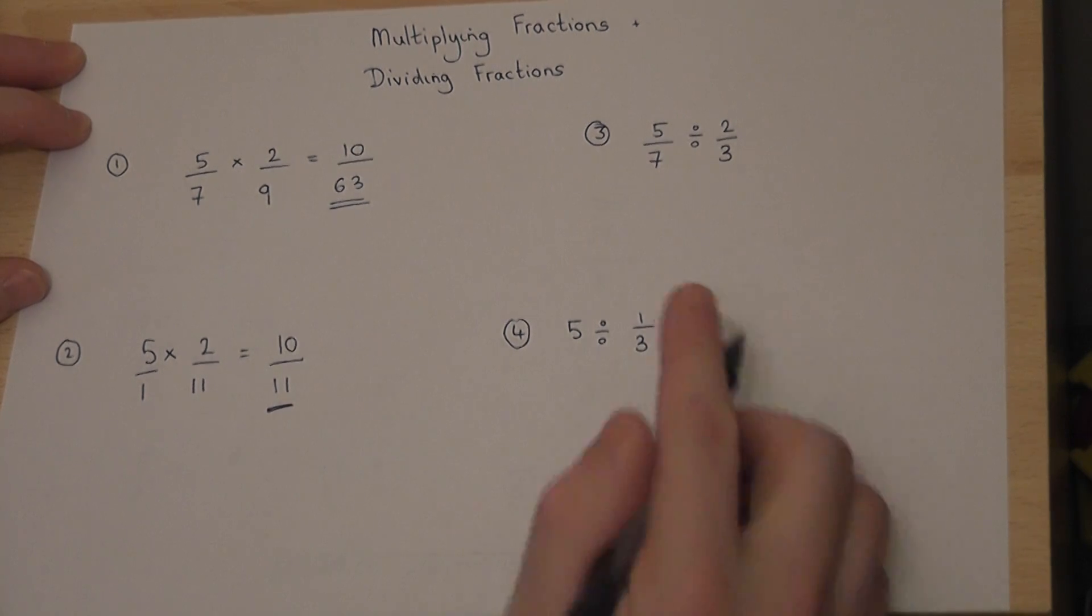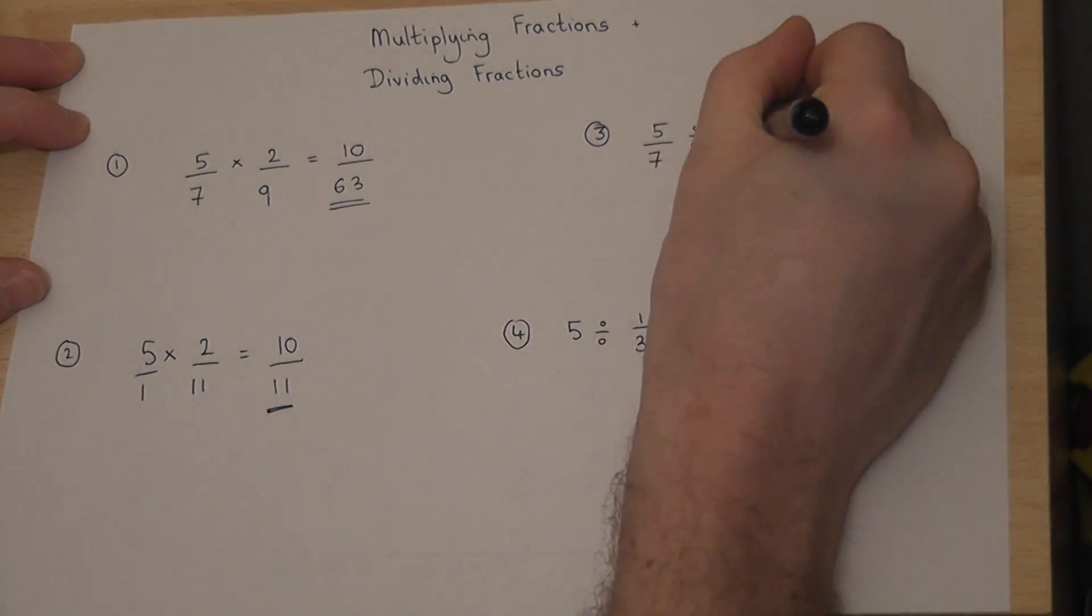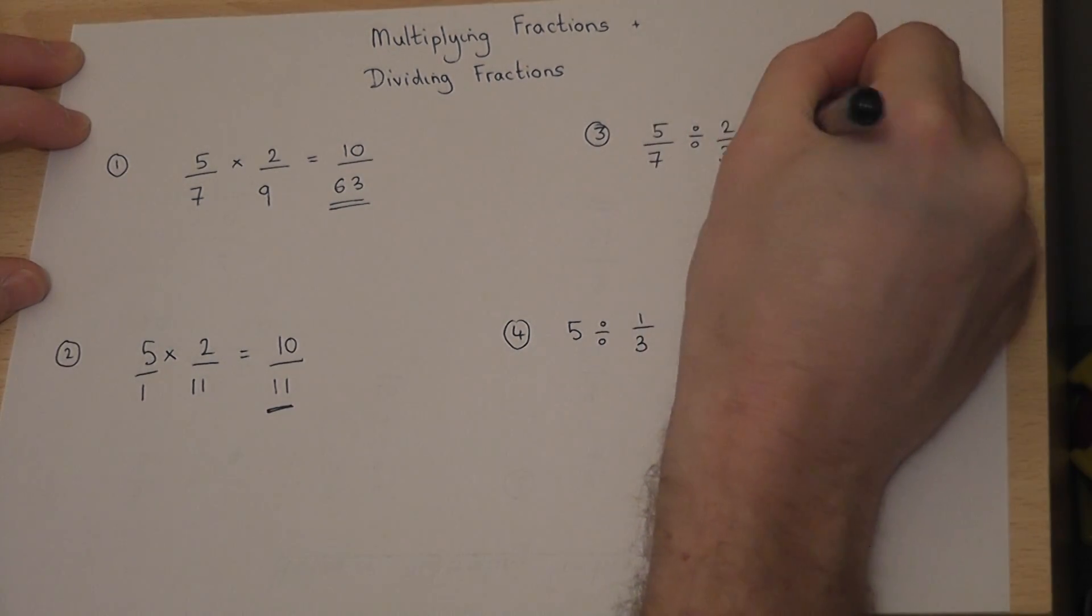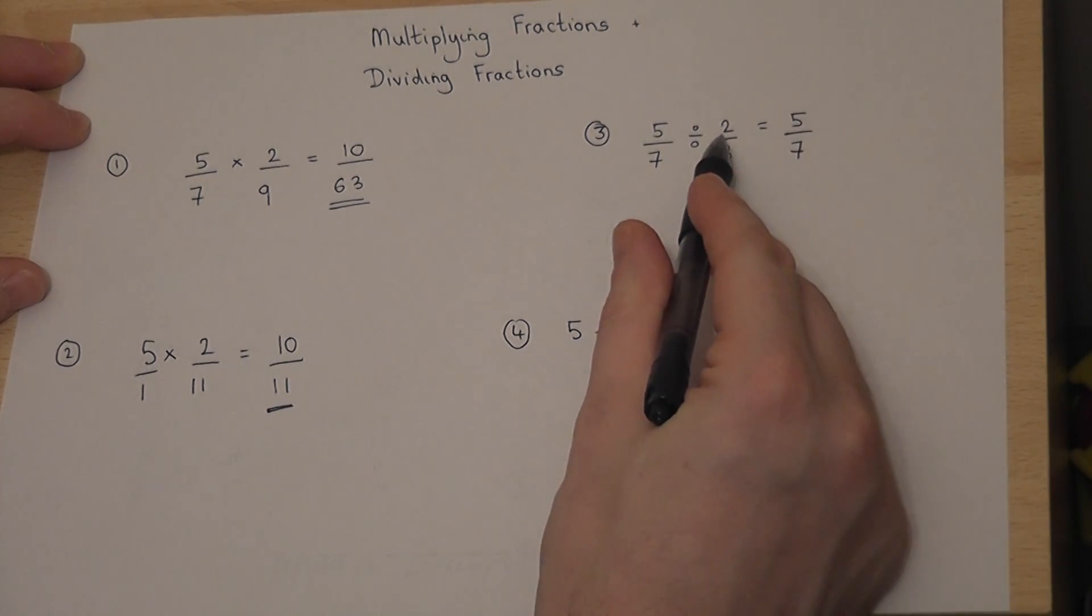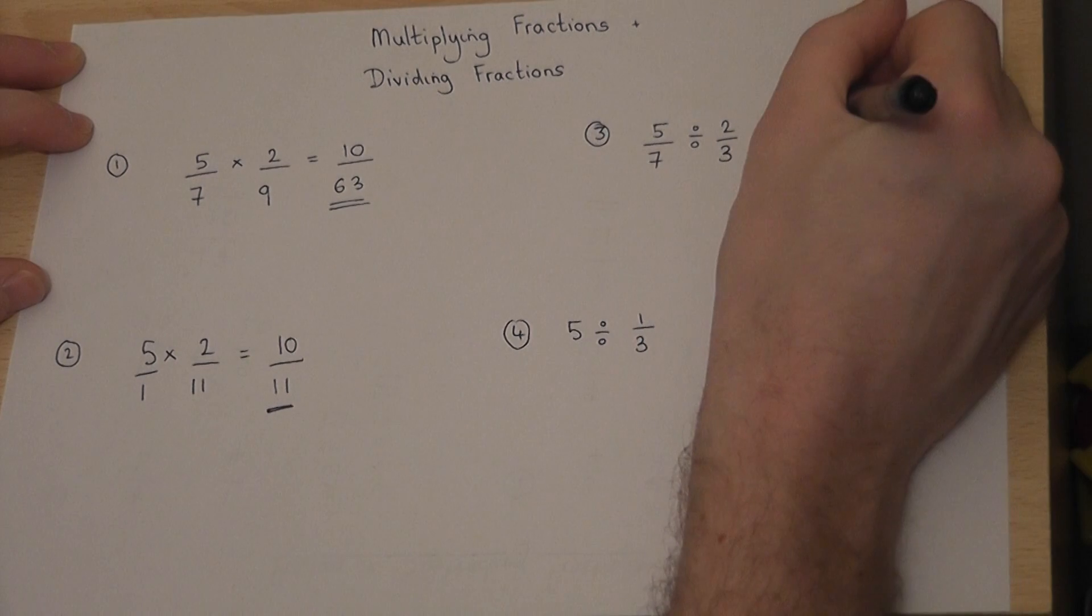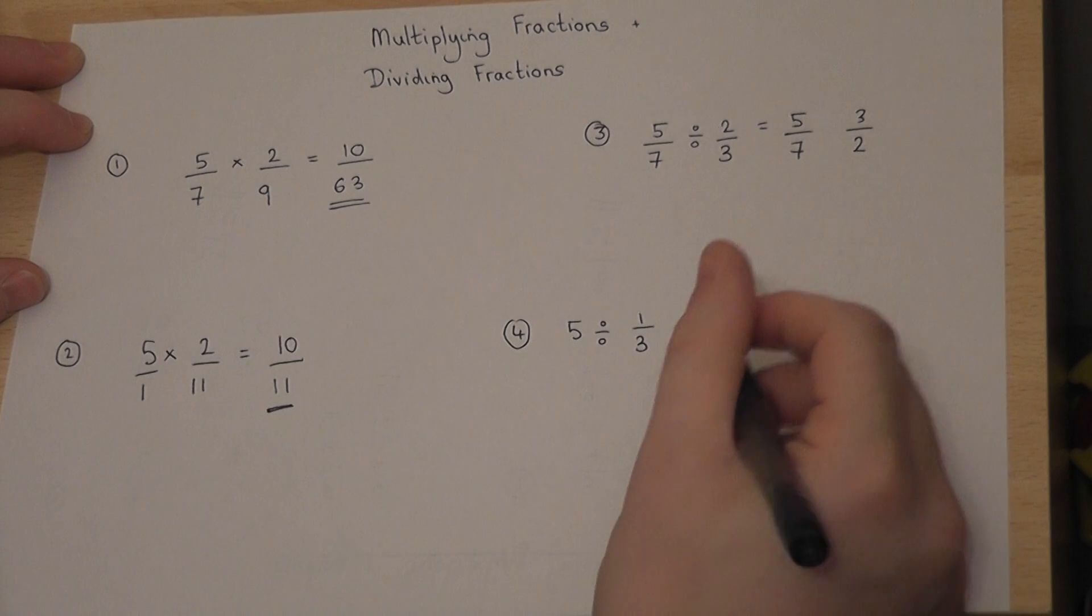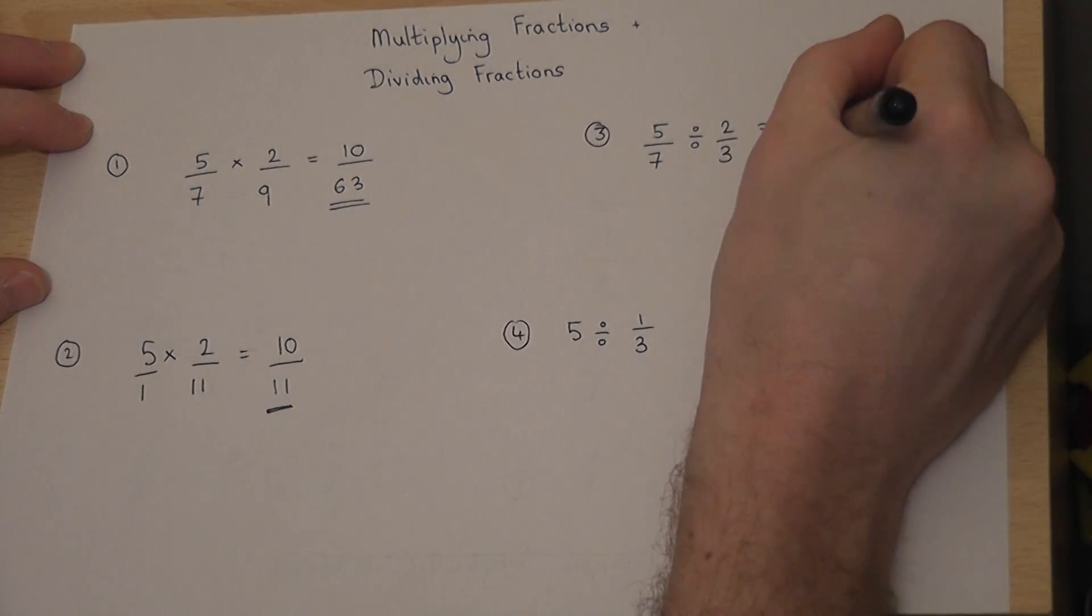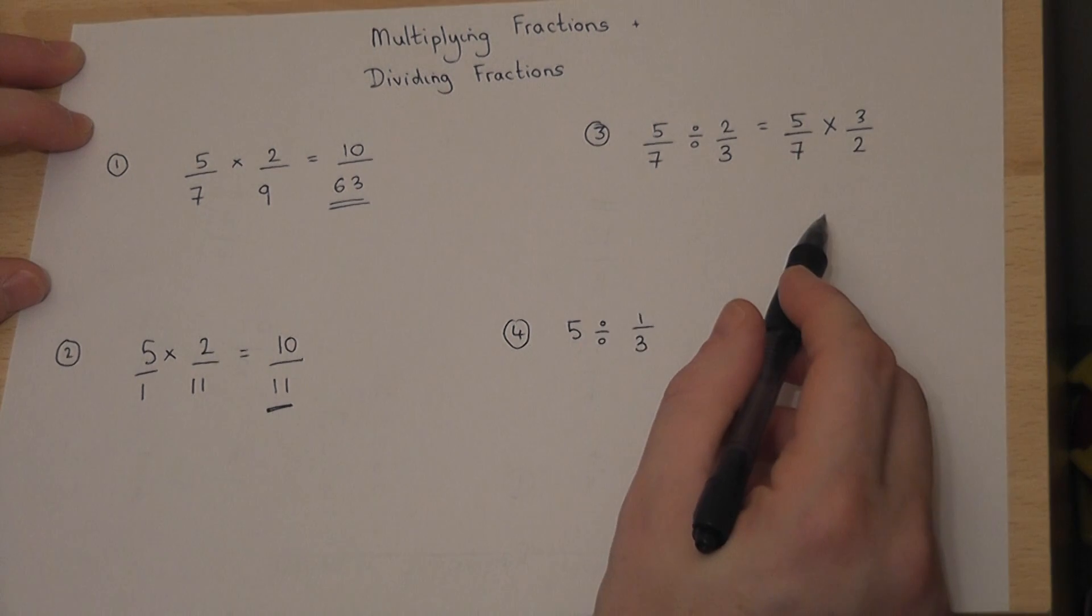To divide fractions, we do an initial trick, which is we flip over or find the reciprocal of the fraction we are dividing by. So, 2 over 3 becomes 3 over 2, and we replace the divide by a times. These two questions are equivalent.